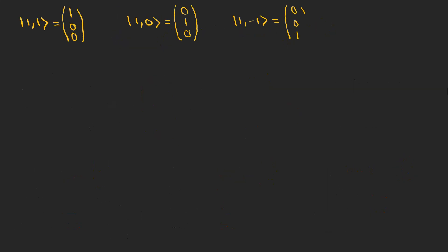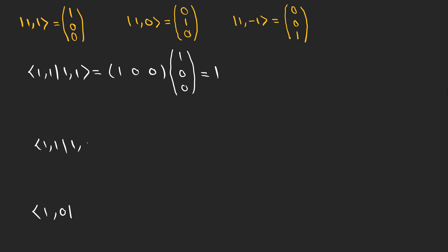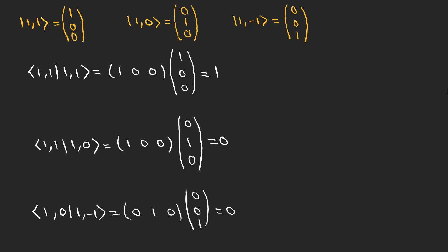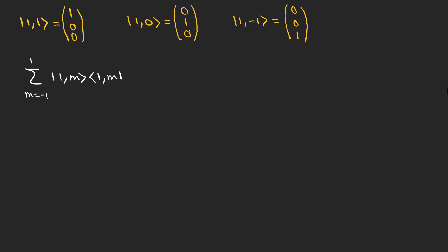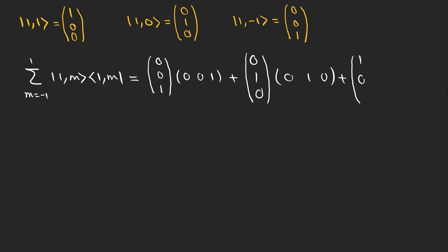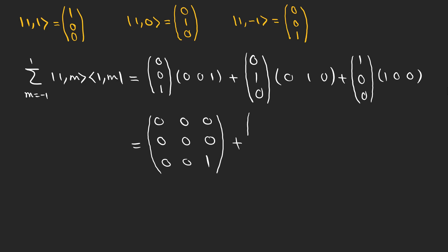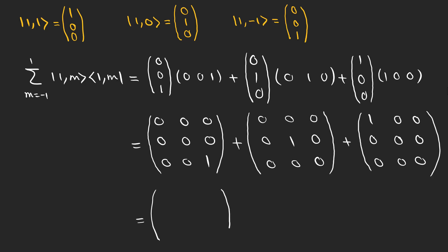Now these are our eigenstates for j equals 1. The inner product of each eigenstate with itself gives 1, and the inner product of different eigenstates is 0 — this is the orthonormality condition. We also find the sum of the outer products of each eigenket with its bra, which gives three 3×3 matrices. Adding them gives the identity matrix, showing that these eigenstates form a complete set and we can span the whole space using these three kets.